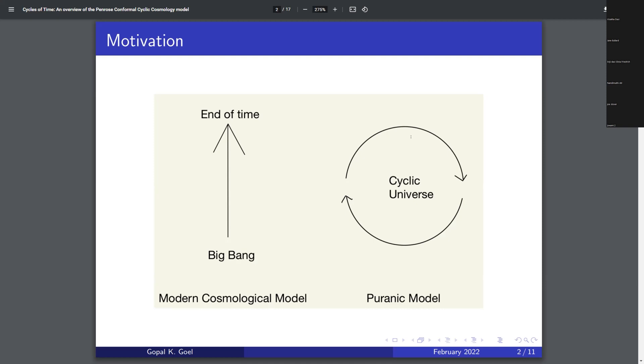and eventually those black holes decay, and all you get is just radiation, and you sort of have this heat death of the universe. So that's the picture shown on the left, where you just go from the Big Bang to the end of time.